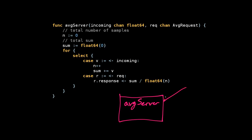Let's draw this one here. On this one, this is the incoming channel, and it has floats coming on it. This other channel, we'll explain in a second, but it has requests coming—some sort of request.